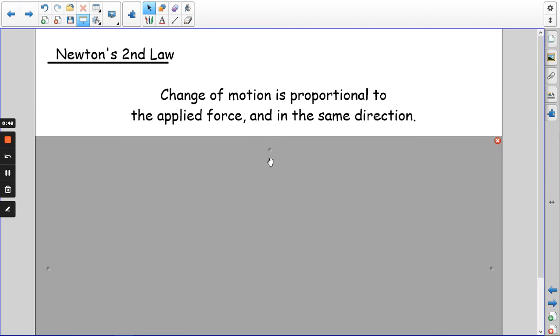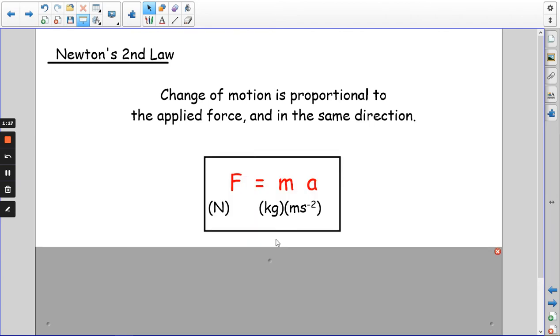Newton's second law is that change of motion is proportional to the applied force and in the same direction. If you push something harder it will accelerate more. So F is proportional to a. He went on to say that when you're working in SI units, mass is the constant in that proportional relationship, and he came up with F equals ma, which is Newton's second law in an equation that we can apply to problems.